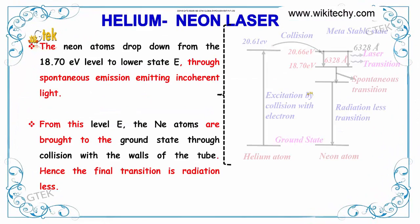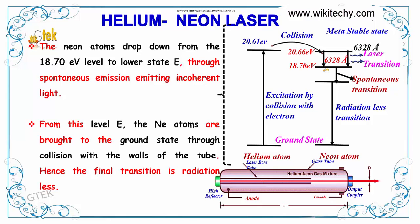The neon atoms drop down from 18.70 eV to the lowest level E by spontaneous emission. From this level E, the neon atoms are brought to the ground state through collision with the walls of the tube. Hence, the final transition is radiation-less.